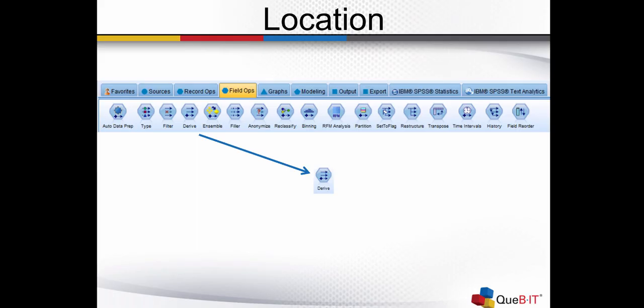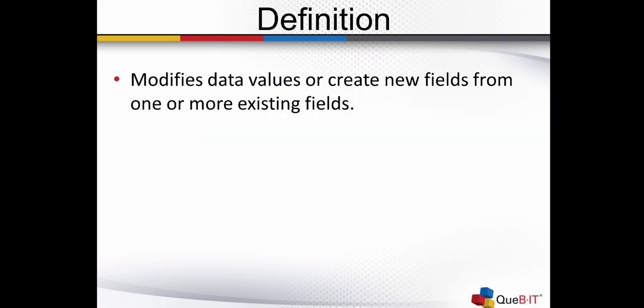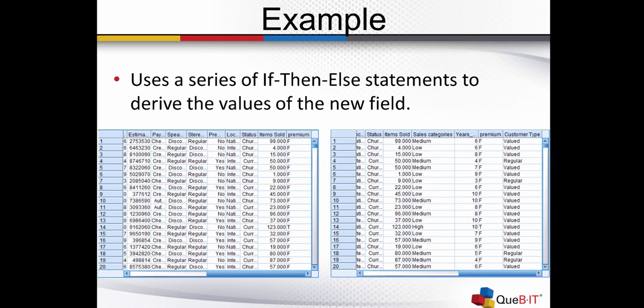The Derive node is located in the FieldOps palette. This node modifies data values or creates new fields from one or more existing fields. When you use the Derive node as a conditional, it uses a series of if-then statements to derive the values of the new field.